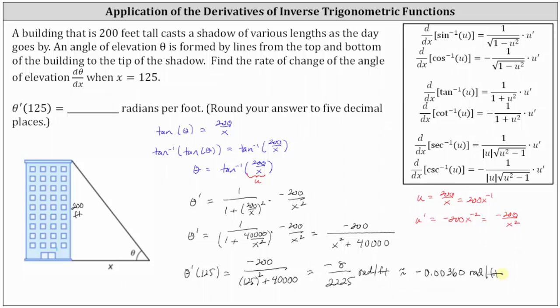The question asks us to round to five decimal places, and therefore the decimal approximation is negative 0.00360 radians per foot.